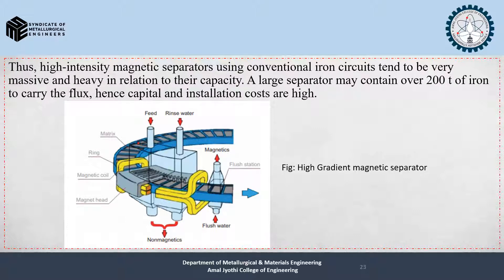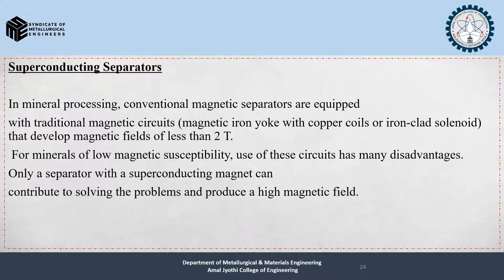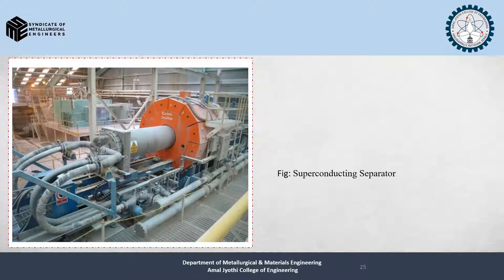This is the figure of a high gradient magnetic separator. Now we will learn about superconducting separators. In mineral processing, conventional magnetic separators equipped with traditional magnetic circuits develop magnetic fields of less than 2 Tesla. For minerals of low magnetic susceptibility, use of these circuits has many disadvantages. Only a separator with a superconducting magnet can contribute to solving these problems and produce a high magnetic field.